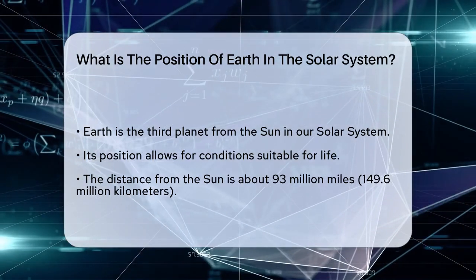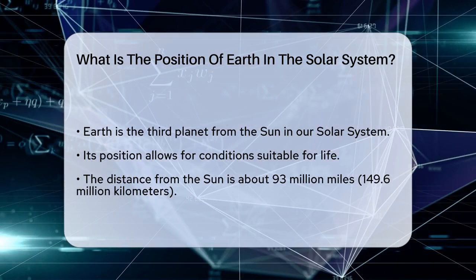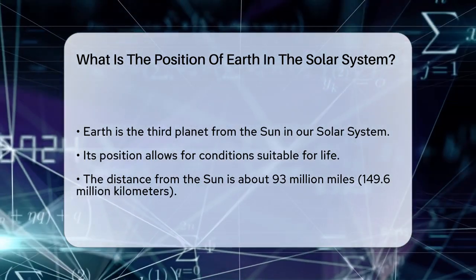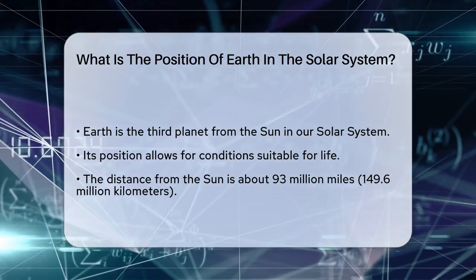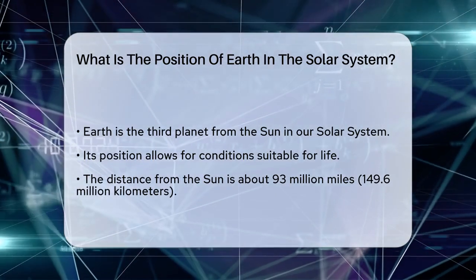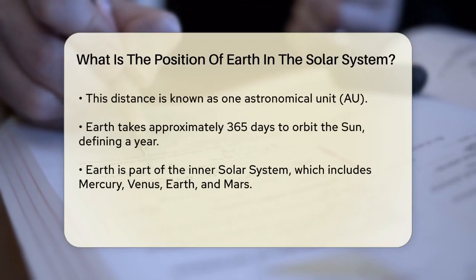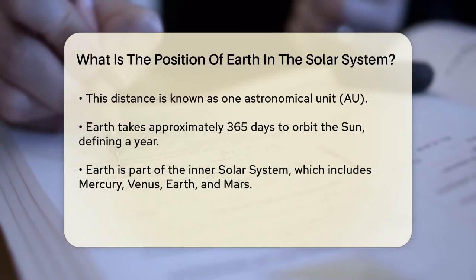Earth is the third planet from the Sun, which is the center of our solar system. This positioning is crucial because it allows Earth to have conditions that are just right for life as we know it. The Sun's energy is balanced at this distance, not too hot and not too cold, making it perfect for liquid water to exist on our planet's surface.